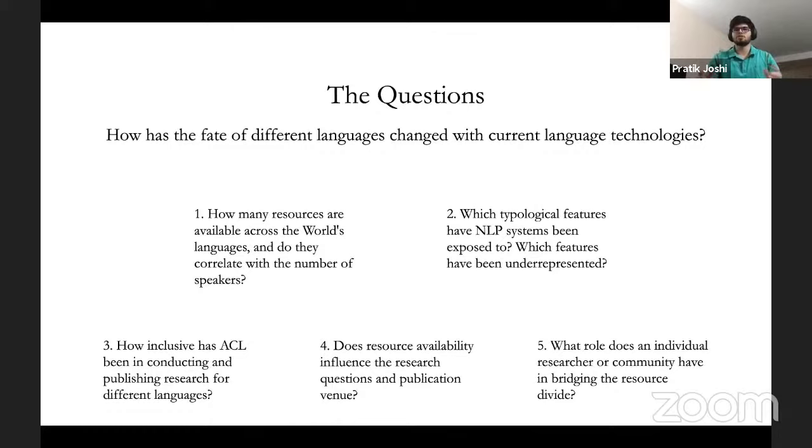We asked this complex question: How has the fate of different languages changed with the current language technologies? We break it down into five more concrete questions. One, how many resources are available across the world's languages and do they correlate with the number of speakers? Two, which typological features have NLP systems been exposed to and which features have been underrepresented? Three, how inclusive has ACL been in conducting and publishing research for different languages? Four, does resource availability influence the research questions and publication venue? And finally, what role does an individual or a research community have in bridging the resource divide?